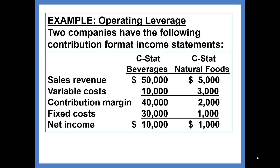Let's take a look at an example. Two companies have contribution margin format income statements: C-STAT Beverages and C-STAT Natural Foods. The beverage company has $10,000 of variable costs and $30,000 of fixed costs, meaning significantly higher fixed than variable costs. The natural foods company has a significant amount of variable costs — 75% of their costs at this level of sales are variable. The cost structures are very different on purpose to show how operating leverage affects profitability.